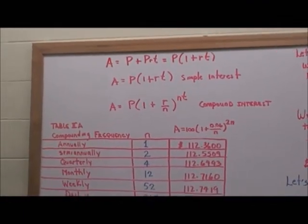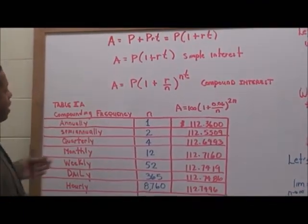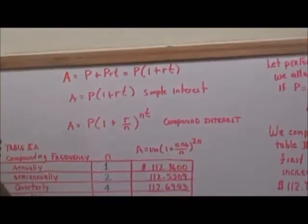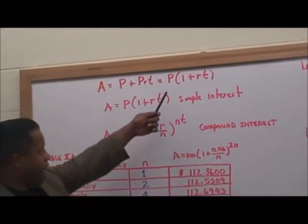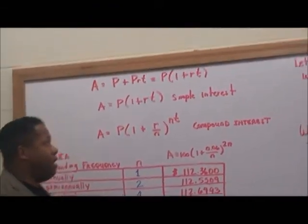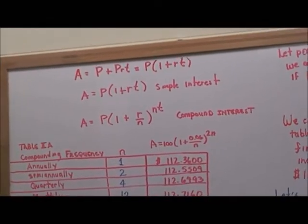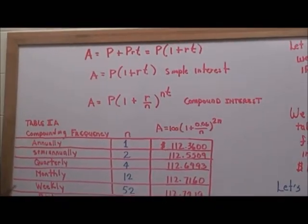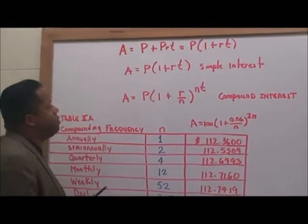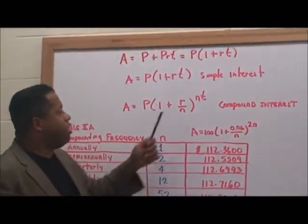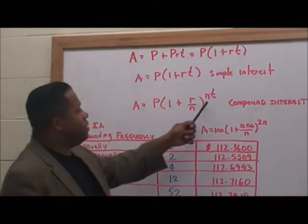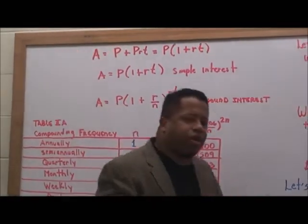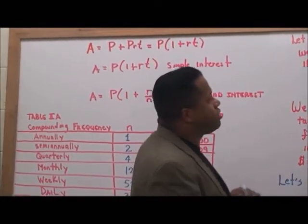Now we'll talk about simple and compound interest. Simple interest: A = P + P·r·t, which factors to A = P(1 + rt). Compound interest: A = P(1 + r/n)^(n·t), where n is the number of compounding periods per year.